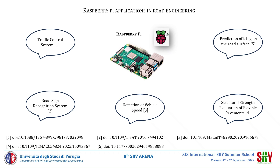In this slide, I briefly list some of the possible applications in road engineering that have been investigated by some researchers, and maybe they can inspire some colleagues for their own research. For example: traffic control systems, road sign recognition systems, detection of vehicle speed, structural strength evaluation of flexible pavements, and prediction of icing on the road surface.